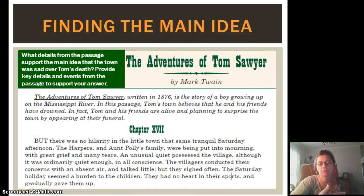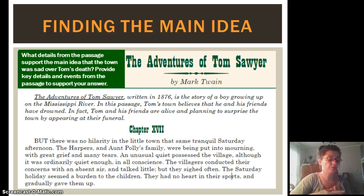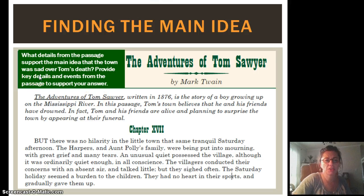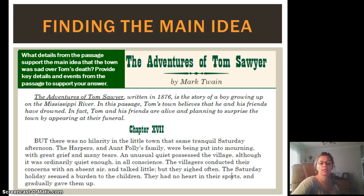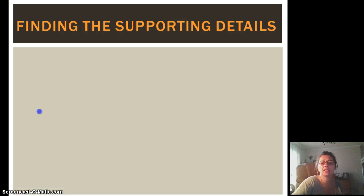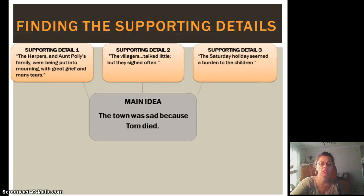Finding the main idea in the Adventures of Tom Sawyer — everybody did great with this in class. We took a look at this passage and read in the introduction that Tom faked his death. When the town found out, the town was devastated — they were so sad. The question I made up was: what details from the passage support the main idea that the town was sad over Tom's death? The main idea of this passage is everyone was sad over Tom's death. Let's take a look and remind ourselves of the supporting details.